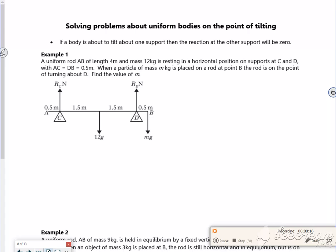If you imagine you've got a ruler on your two fingers and you're holding it up and somebody just presses down on the end until it's just about ready to tip. At that point, the furthest away point that it was on is kind of like pretending it's not there almost.